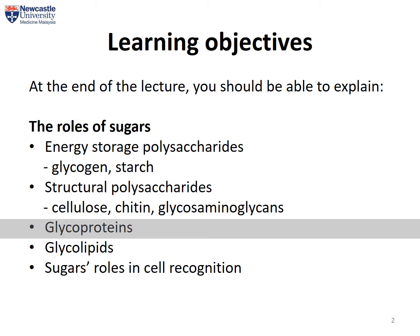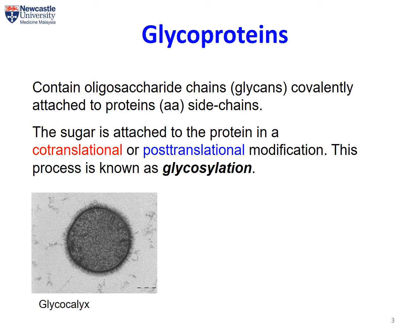In the third section we will have a quick look at glycoproteins and glycolipids and explore the major roles of sugars in cell recognition. Glycoproteins are basically proteins attached with short chains of sugars called oligosaccharides. These sugars or glycans can also be attached to the side chains of amino acid residues. In this picture you can see that the hairy structures on the surface of the cell are actually sugars.